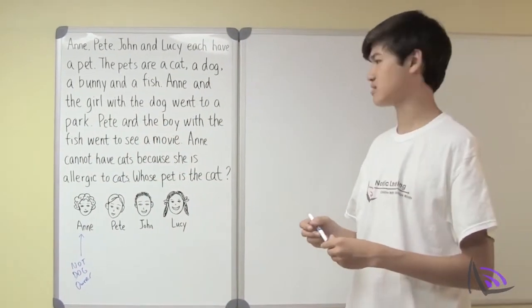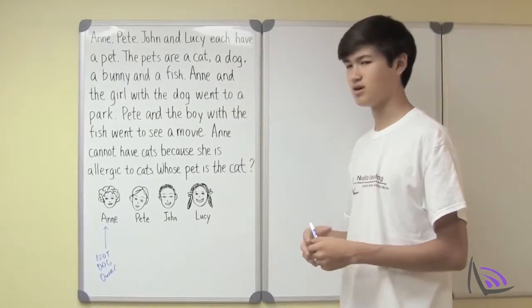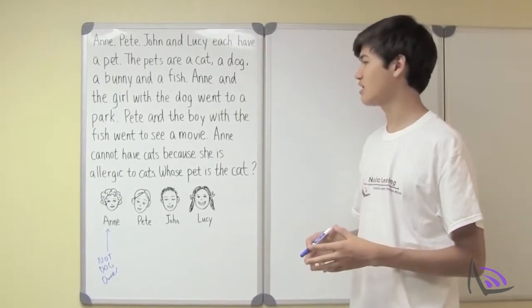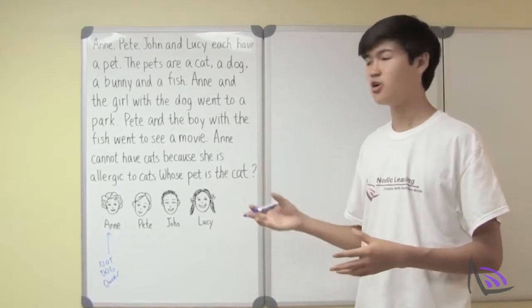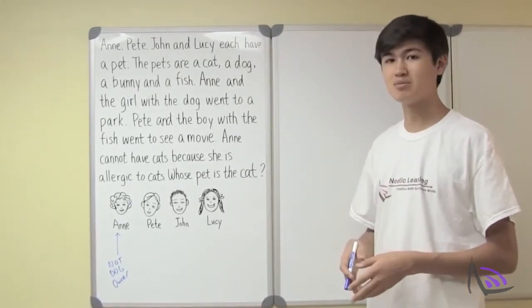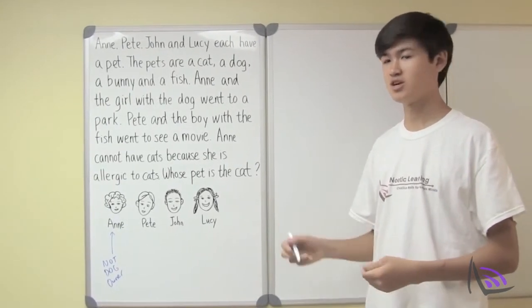Next, let's go to the next line. Pete and the boy with the fish went to see a movie. Once again, this line doesn't tell us who is the fish owner but it does tell us that Pete must not be the fish owner. So let's make a note of that too.